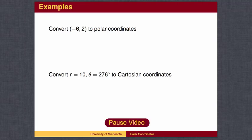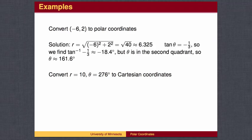Here are two examples. You may wish to pause the video to work these out on your own. Converting to polar coordinates, know that the ordered pair is in quadrant 2, so the angle should be between 90 degrees and 180 degrees. Your calculator will give you an angle of negative 18.4 degrees, which is a fourth quadrant angle. To find the second quadrant angle, subtract 18.4 degrees from 180 degrees.